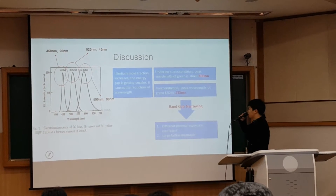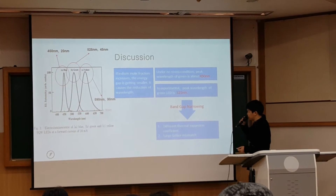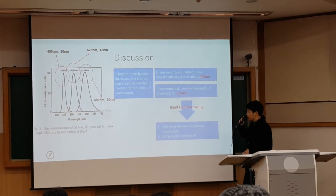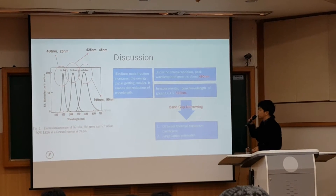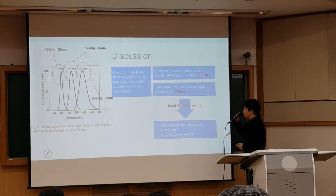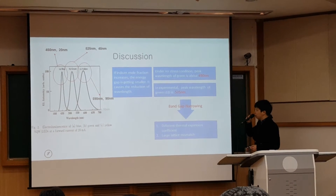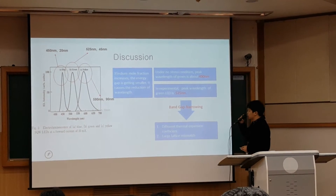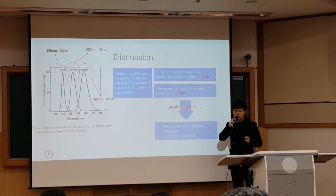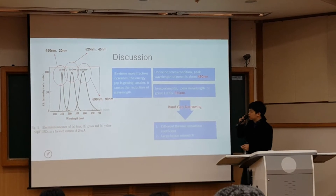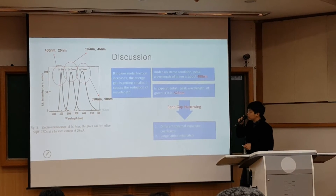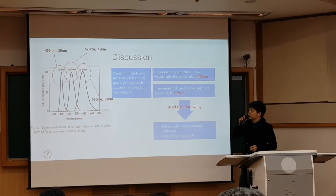Now you are watching EL intensity as a function of wavelength. It is divided into three different colors. If the Indium gallium fraction increases, the energy gap gets smaller, which causes the reduction of wavelength — meaning you can change the LED's color by changing the Indium gallium fraction while making the devices.